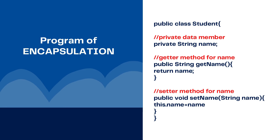So the rule is: a variable which is private should have a corresponding getter and setter method. You need a private data member along with getter and setter methods — that's how we can achieve encapsulation. It's as simple as that.